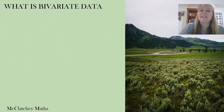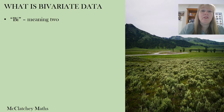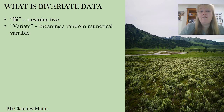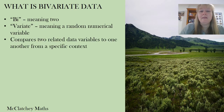Let's get started by talking about what Bivariate Data is. When we break up the word bivariate, we've got 'bi' which means two, and 'variate' means a random numerical variable. So basically we're talking about the relationship between two different types of numerical data from specific contexts.